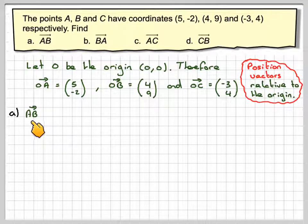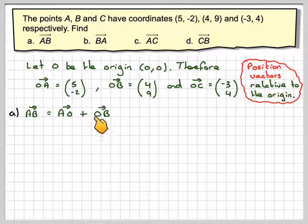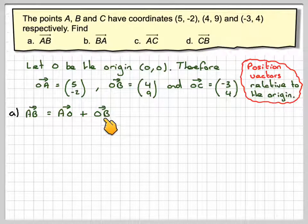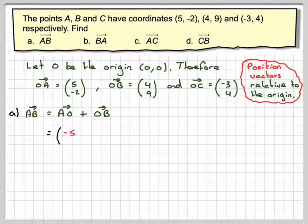So, AB is the same as going from the point A back to the origin. So that's a vector AO from the origin to the point B. Here, we've got the vector OA, but here I need to find the vector AO. That means that the vector AO is going to be (-5, 2). And then the vector OB is going to be (4, 9).